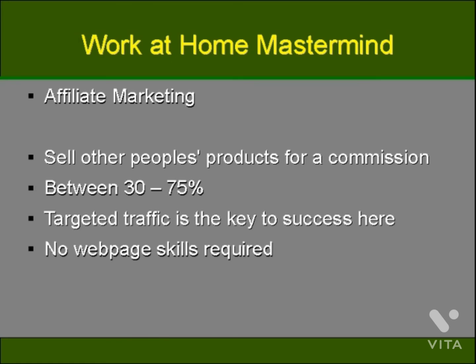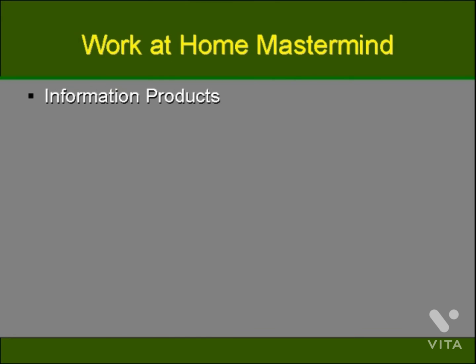This is where most people start when they're working online. Then there are information products. People are always looking for information, and it doesn't matter in what form it comes — audio, video, articles, e-books, and so on. You can provide information products via affiliate links or you can set up your own pages with turnkey information products. You can either make commissions with the former or keep all the money with the latter.